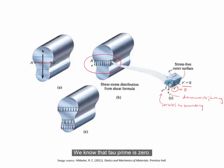We know that tau prime is zero, so the shear stress must be directed tangent to the boundary in the form of tau double prime.